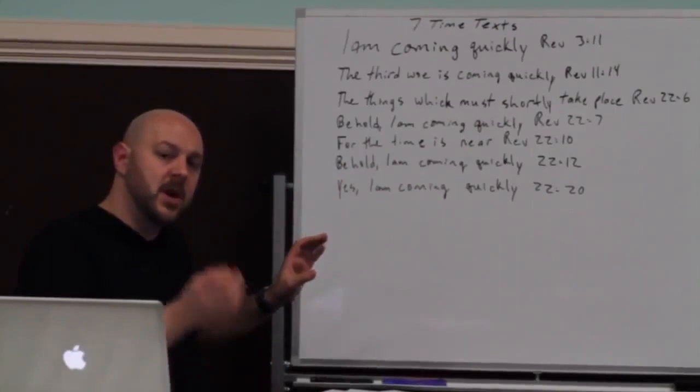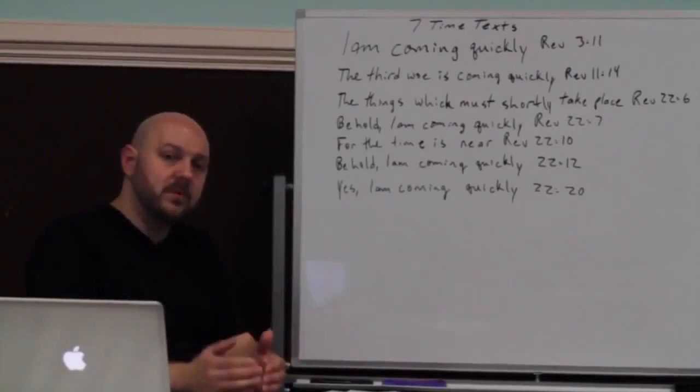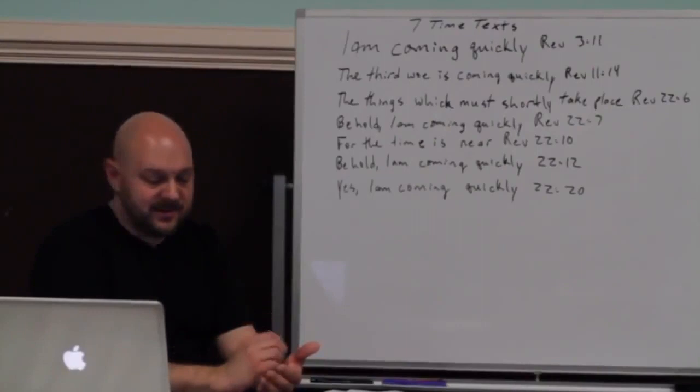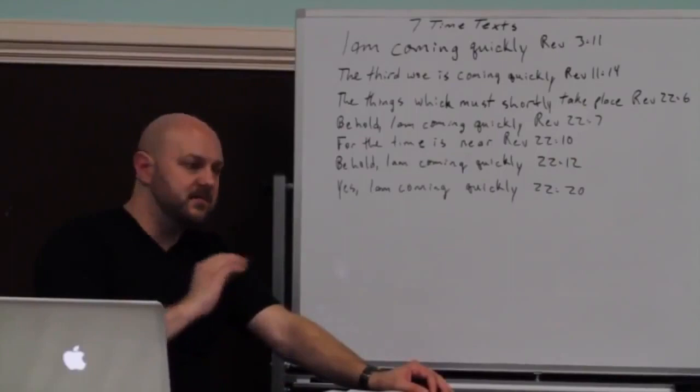These are time texts that tell us when the book of Revelation was supposed to come to pass. Now, let's say that in the first video I've already proven that the book of Revelation was written during the reign of Nero. But if the book of Revelation was written then and the author had said, though the Lord has given me this prophecy, it's going to be another 2,000 years before it takes place, we would know, okay, good for you, John.